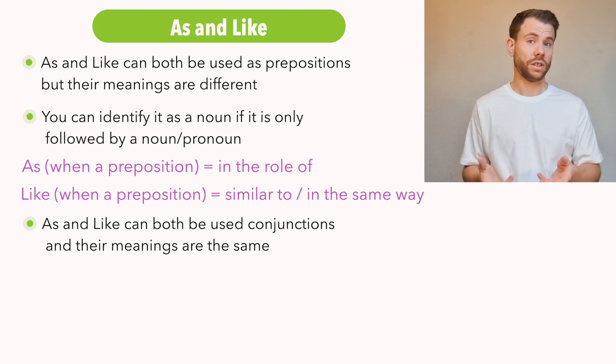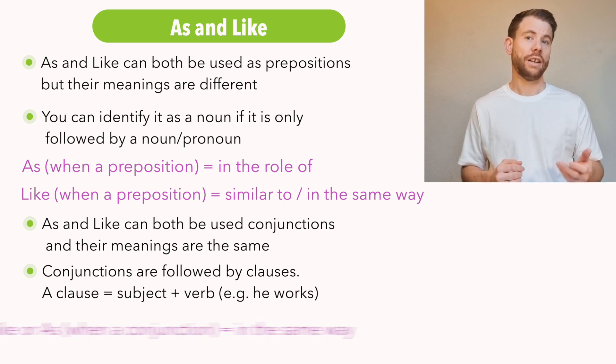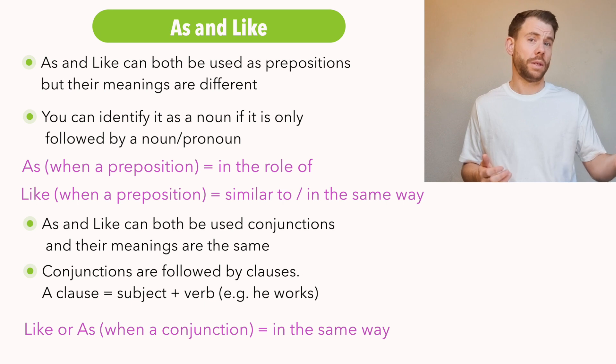Conjunctions are a grammatical term. You may not know what that means. They're essentially linking words. And after a conjunction, you need a clause. A clause too is a grammatical term, but it's important for you to understand this topic. A clause is when you have a subject and a verb, a conjugated verb with that subject. So after a conjunction, you need this. Now, when as and like are used as conjunctions, they have the same or a very similar meaning, which is in the same way.